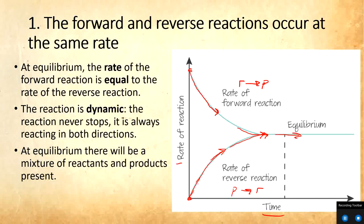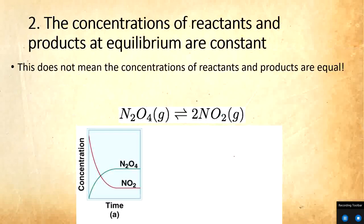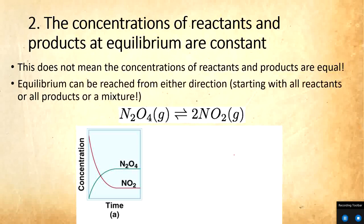So again, when that forward and reverse reaction rates are equal. The next thing is that the concentration of reactants and products at equilibrium are constant. This does not mean that they are equal. So the concentrations will stay the same, but they don't have to be the same as each other. And equilibrium, so an important fact here is that equilibrium can be reached from either direction. So we can start with all products, or we can start with all reactants, or a mixture of the two.